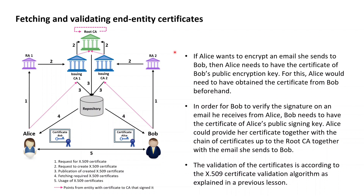In order to validate the authenticity of the encryption key before using it, Alice then needs to validate the X509 encryption certificate of Bob according to the X509 certificate chain algorithm as explained in a previous lesson. If the validation of the encryption certificate of Bob is successful, Alice is then good to go ahead with securing the email by signing and then encrypting the email and to send this secured email to Bob.